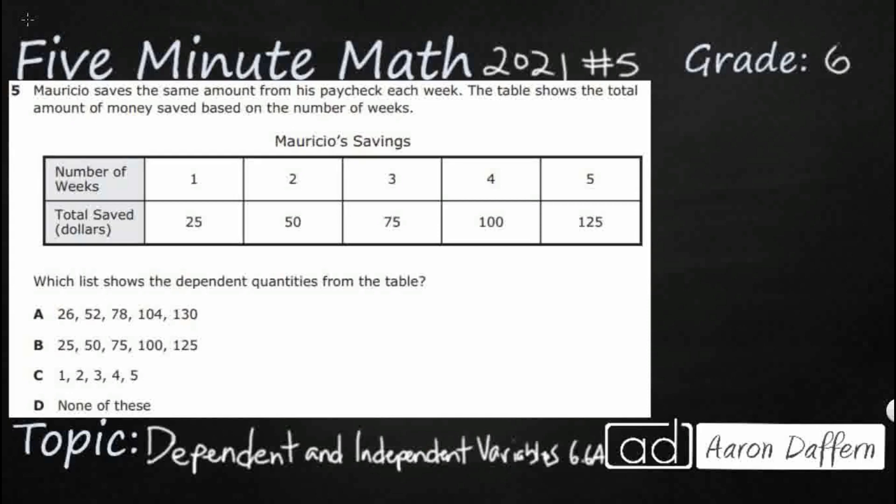So, Mauricio saves the same amount of money from his paycheck each week, so it's a stable rate. That's going to be important for us. And then the table shows the total amount of money saved based on the number of weeks. One week, $25, all the way up to five weeks, $125.